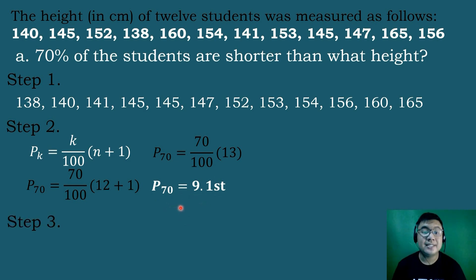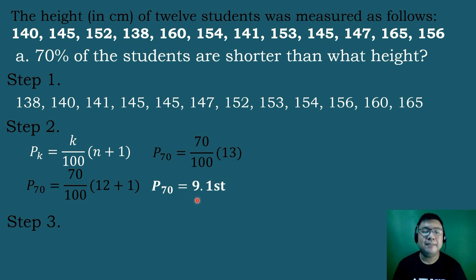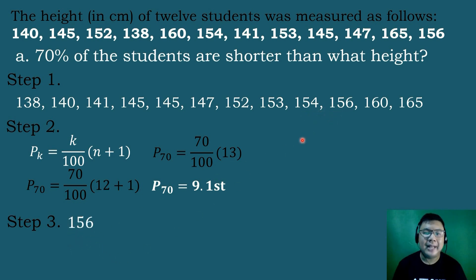So percentile 70 is at the 9.1 position, meaning it is located somewhere in between the 9th and the 10th number. The next step is to identify the 9th and 10th numbers. Counting through the ordered list, the 9th number is 154 and the 10th number is 156. We then subtract these two numbers: 156 minus 154 equals 2.